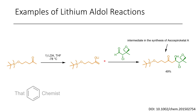In this next example, we take a TBS-protected ketone. Upon treatment with LDA, we form a lithium enolate and add it into an alpha-chloroaldehyde. There's also an oxetane — a four-membered ring with an oxygen — in the substrate. In the product, we similarly obtain the anti-product: anti-chloride, anti-hydroxy. Because there are no additional groups coming off the methyl position in the starting material, and there is chirality in the aldehyde, this would be a single enantiomer.